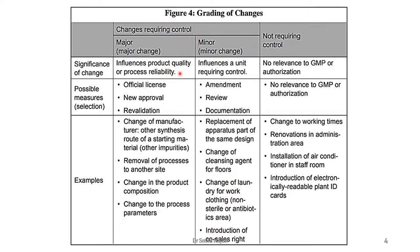What needs to be documented are all types of major and minor changes. In the case of major changes, new approvals and licenses may be required, and revalidation of the process or product may be necessary. In the case of minor changes, amendments to existing documents, review of documents, and the product manufactured after the minor change, along with appropriate documentation and authorization, are necessary. Major changes directly affect product quality or process reliability, requiring approvals, licenses, and revalidation; minor changes require document review and amendment.